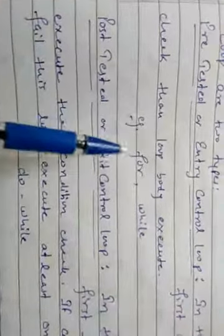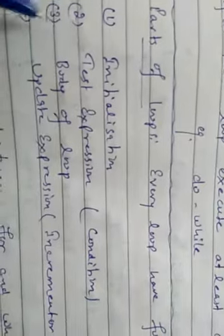Now, what are the parts of a loop? Every loop — whether for, while, or do-while — has four parts. First is initialization: this is the starting point of the loop. Second is the test expression, also called the condition, which determines till where the loop will execute. Third is the body of the loop. Last is the update expression, also called increment or decrement.